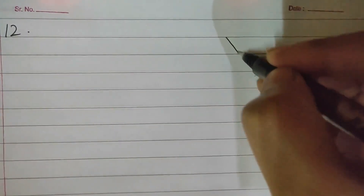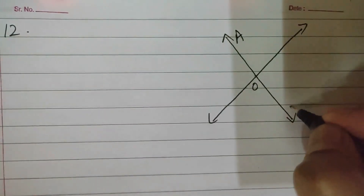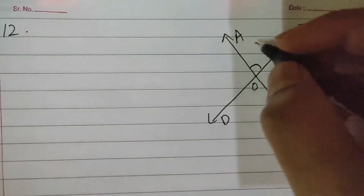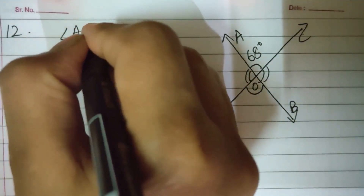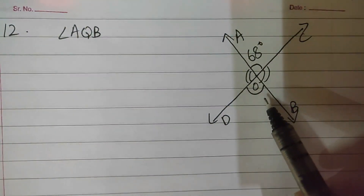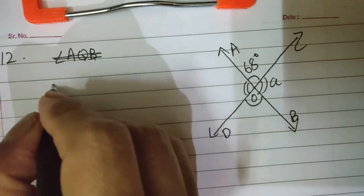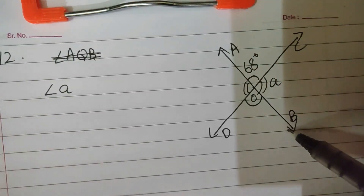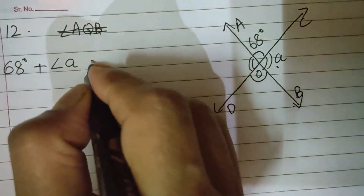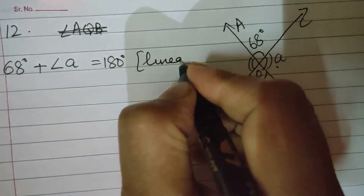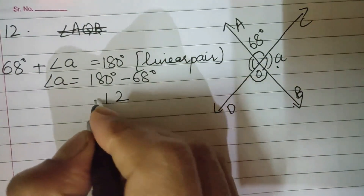Sum number twelve: two lines AOB and COD are intersecting at point O. Angle AOC is given as 68 degrees — find angle A. Since AOB is a straight line, 68 degrees plus angle A equals 180 degrees — linear pair. So angle A equals 180 minus 68 equals 112 degrees.